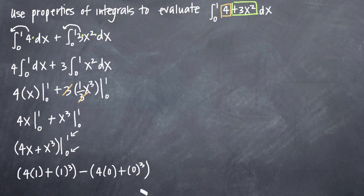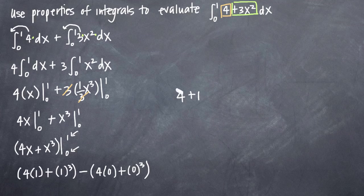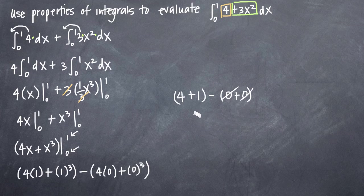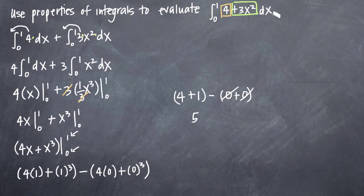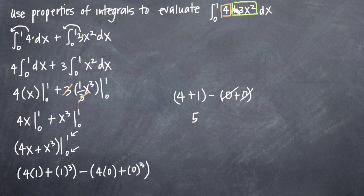And now that we've plugged in 1 and 0, we just simplify as much as possible. So we'll get 4 plus 1 over here minus 0 plus 0. And obviously, this is all going to go away and we'll just be left with 5. And that's it—5 is the integral of 4 plus 3x squared on the range 0 to 1.